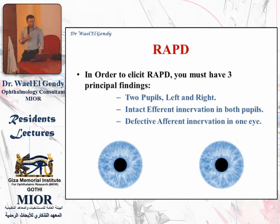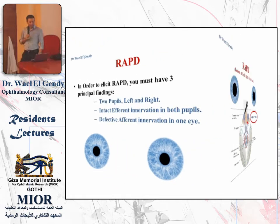In order to have a relative afferent pupillary defect, you must have three things: you must have two pupils — left and right — so you can compare between them; you have to have intact efferent innervation for both pupils; and you have to have a defective afferent innervation, which means an afferent pupillary defect in one eye.